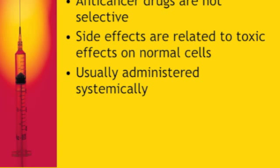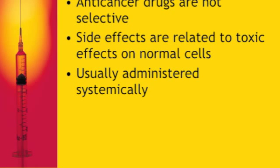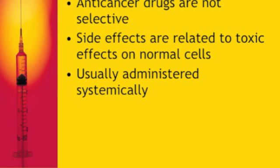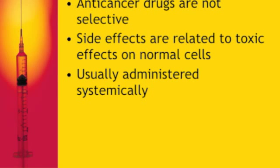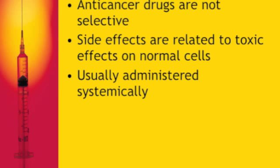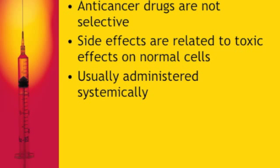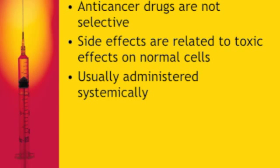Chemotherapy drugs are anti-cancer drugs. They are not selective, meaning chemo does not choose which cells to destroy — it destroys both normal cells and cancer cells. Normal cells are able to repair themselves and continue to grow, which makes side effects temporary. Cancer cells, however, are less able to repair themselves because they are already damaged due to mutation, which is why chemotherapy is effective.